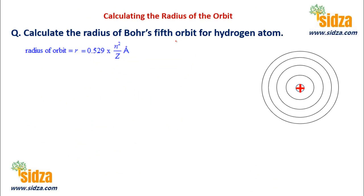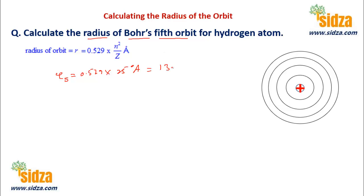Let's do a simple question: calculate the radius of Bohr's fifth orbit of hydrogen. For hydrogen the atomic number is 1, so R5 = 0.529 times 5 squared which is 25 angstroms, giving 13.225 angstroms.